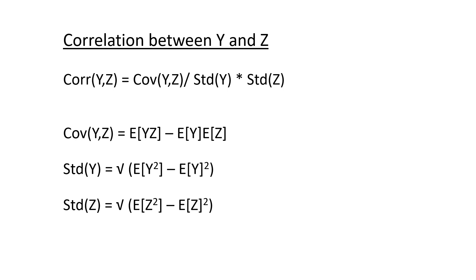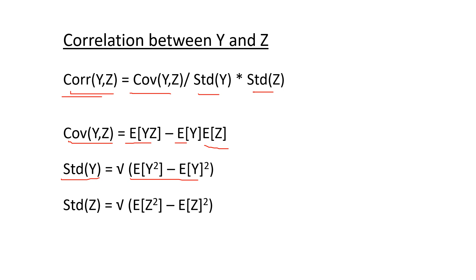For the second part, we need to find the correlation between y and z. Correlation is the covariance divided by the product of the standard deviations. The covariance equals E[YZ] minus E[Y]·E[Z], and the variance can be written as E[Y²] minus (E[Y])². So we need to find all these expectations, which requires finding the PDFs of the distributions.